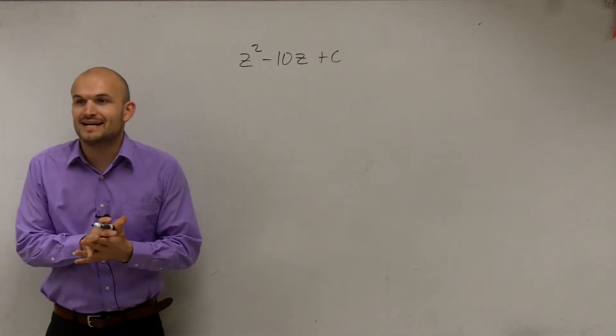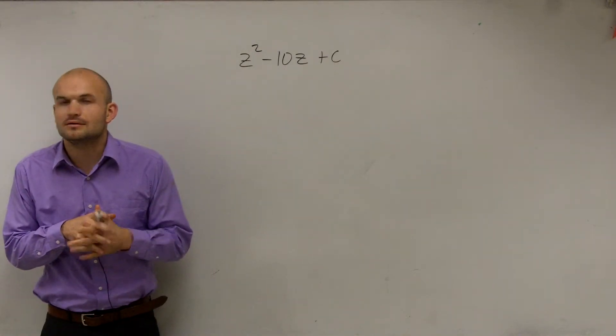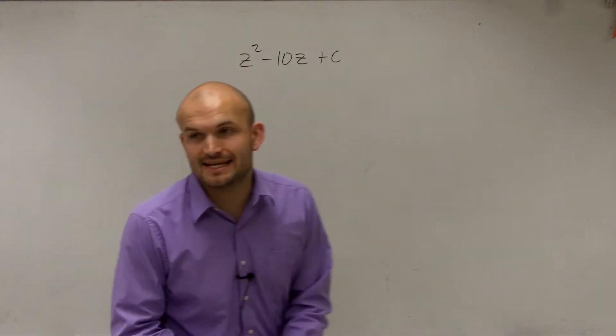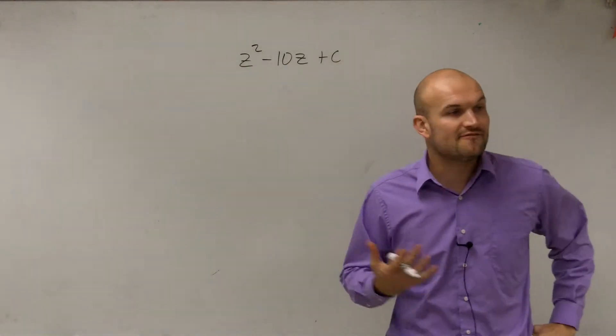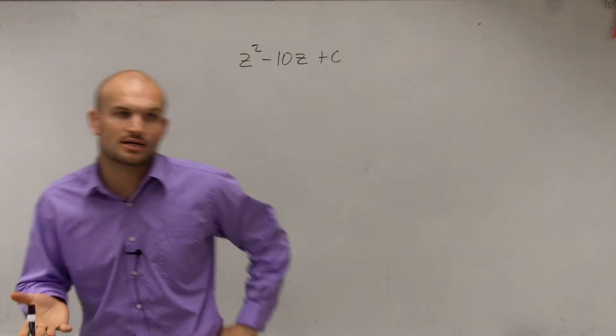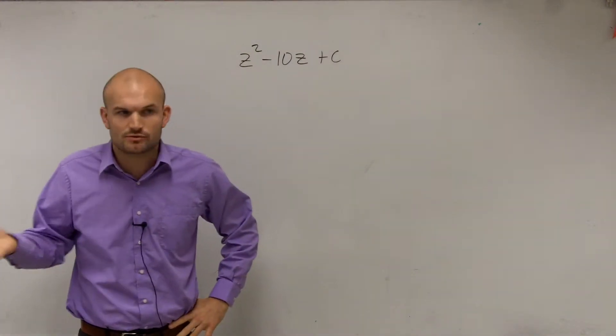So here we go. We have z squared minus 10z plus c. And what we want to do is find the value of c that is going to complete the square or create a perfect square trinomial.